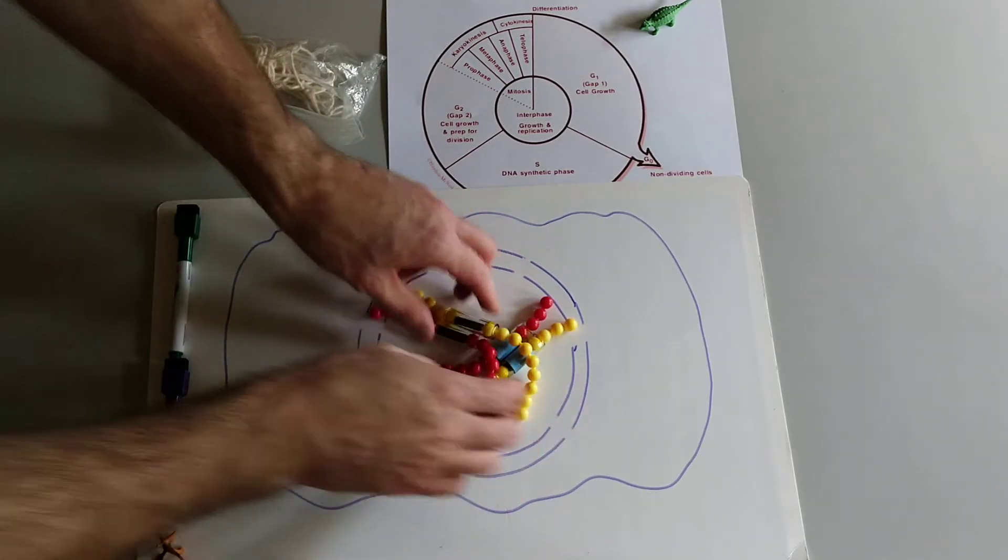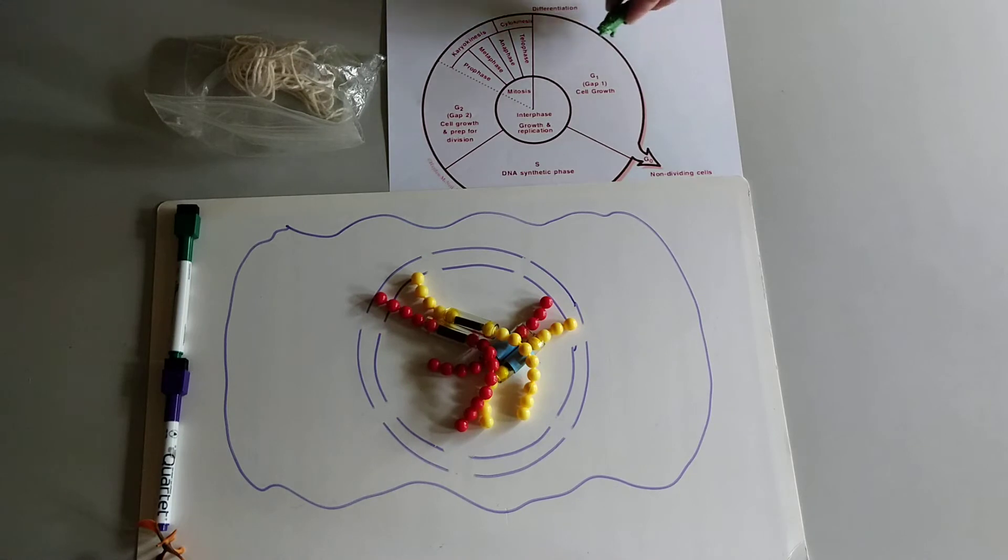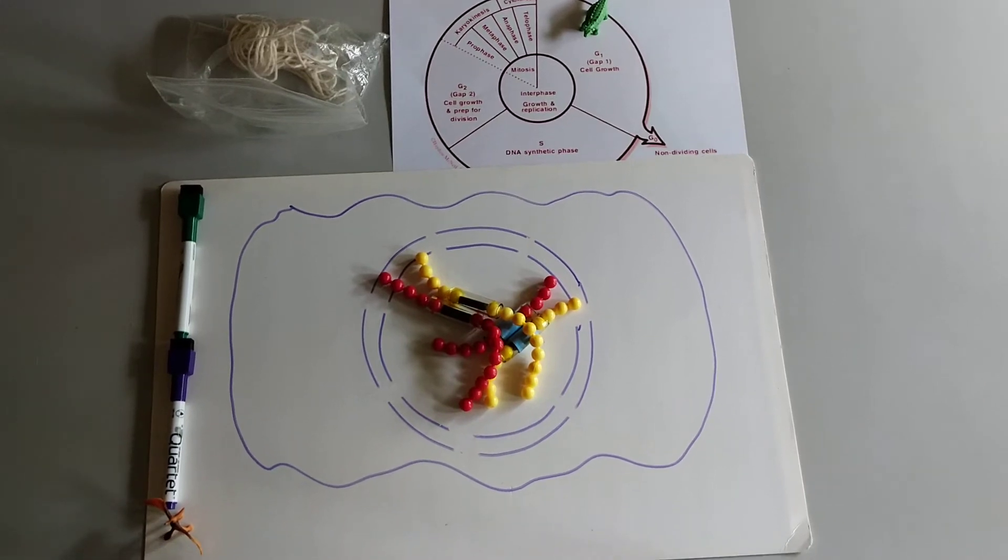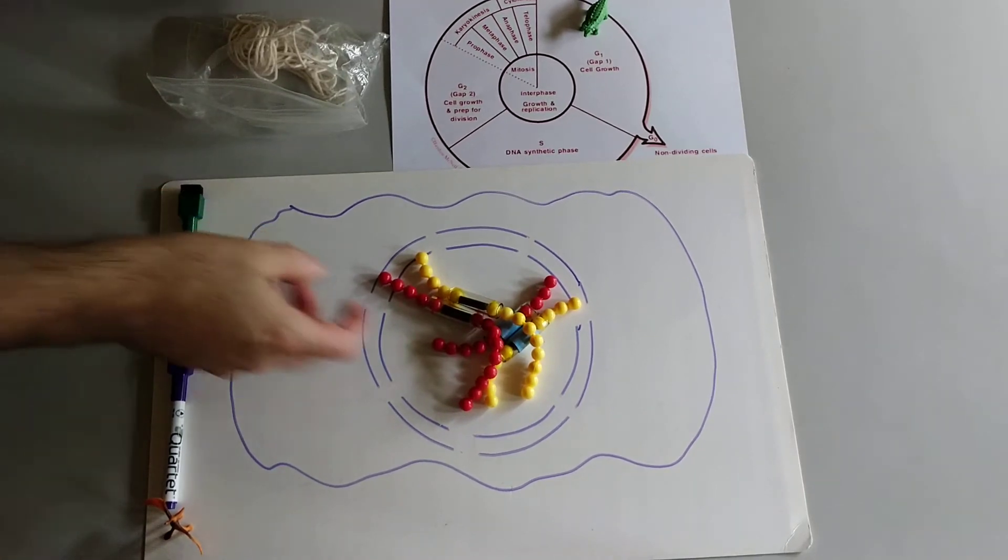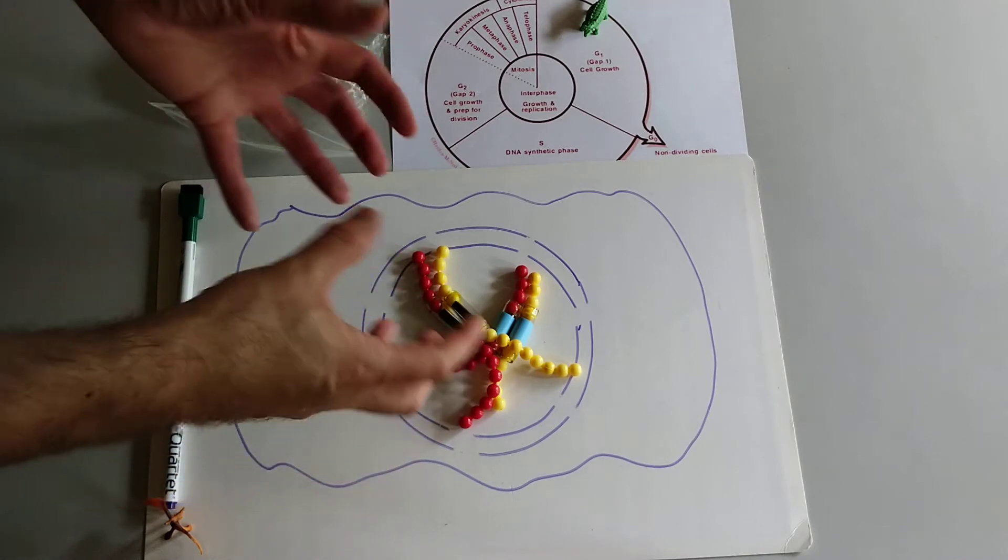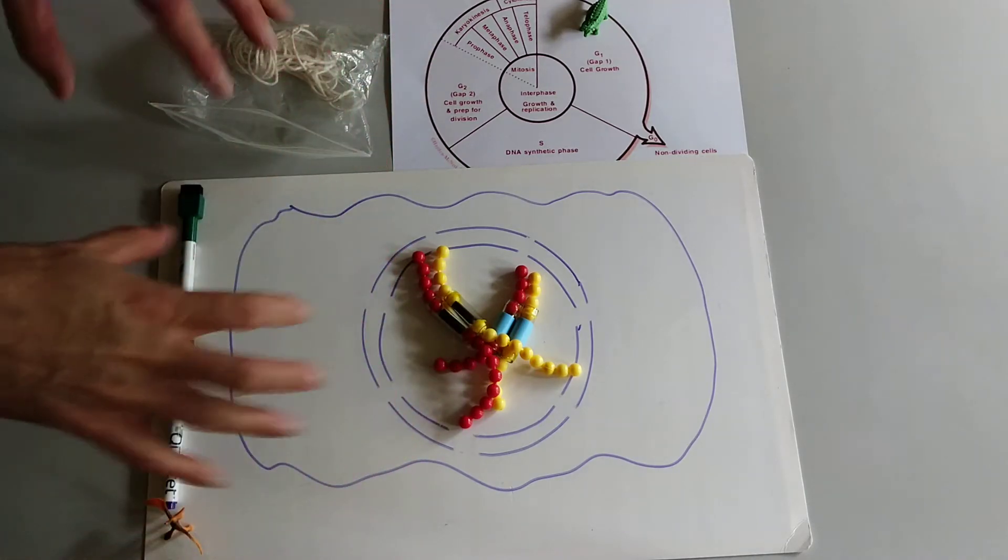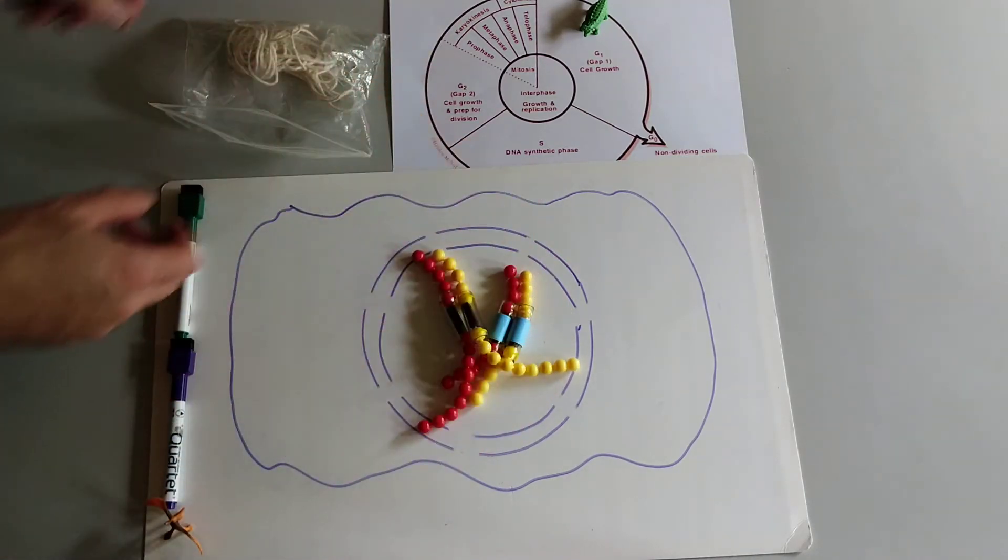And normally if the cell is in interphase, especially this G1 of interphase, the chromosomes are unduplicated. And they are kind of taking up the entire nucleus. They're in the form of chromatin. They're kind of a jumbled mess inside the nucleus.